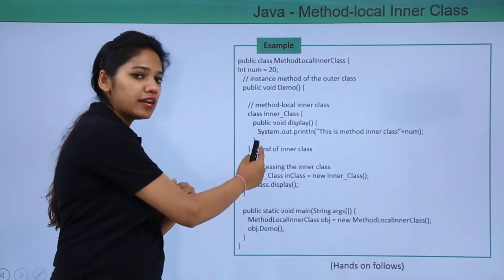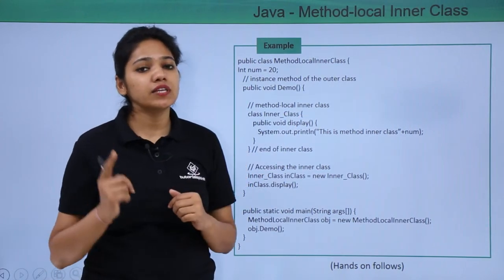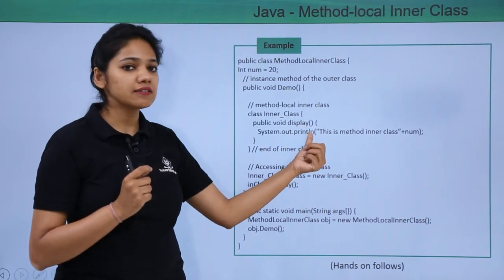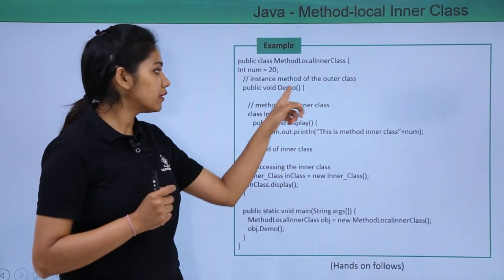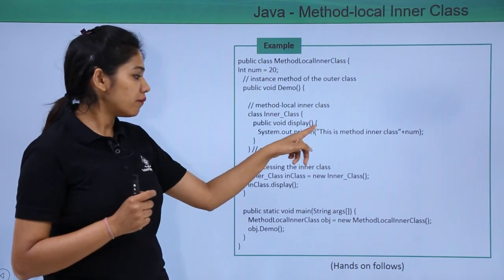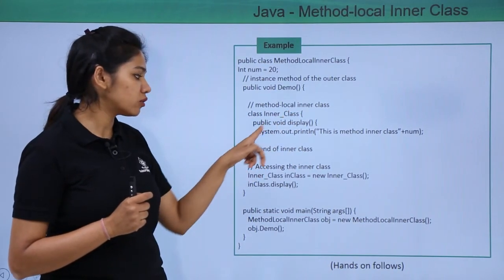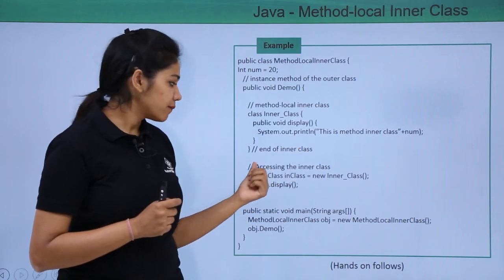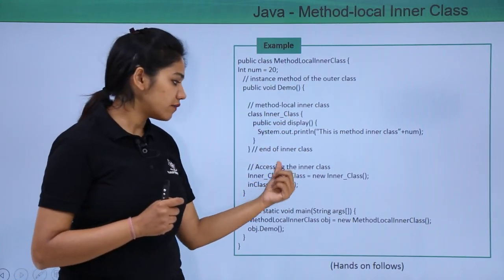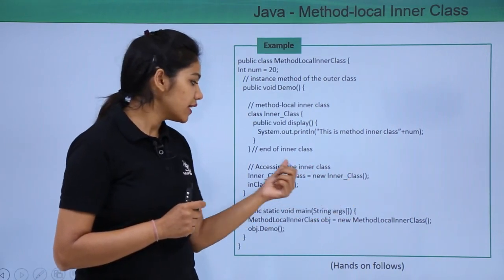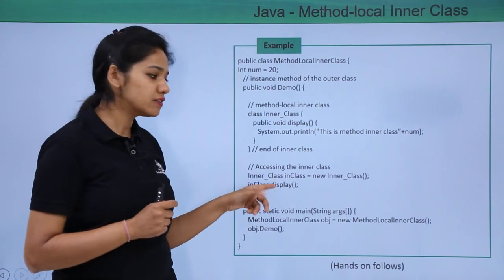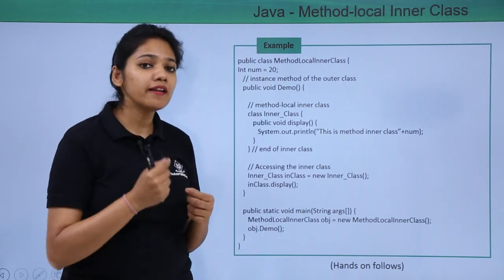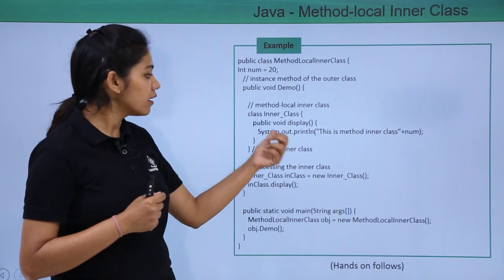We close the display method and then close the inner class. The important thing to remember about method local inner classes is that we need to instantiate the inner class within the same method. After closing the inner class, we create an object: inner_class objectName = new inner_class(). Then we call the display method using that object: objectName.display(). This is your method local inner class.